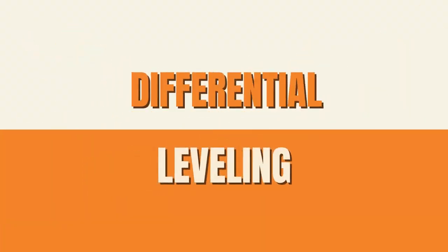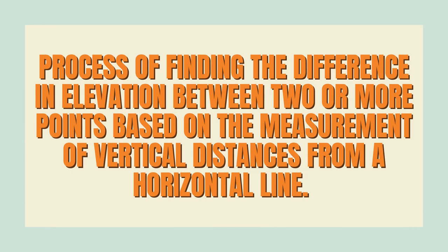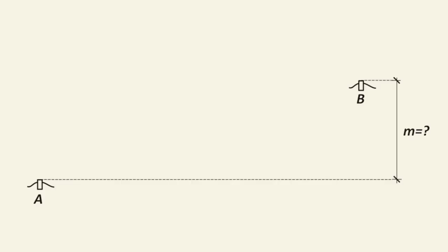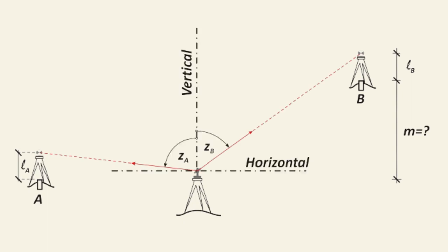Differential leveling is the process of finding the difference in elevation between two or more points based on the measurement of vertical distances from a horizontal line. On the other hand, Total Station Differential Leveling is a variant of conventional differential leveling, which is often used when traversing to calculate the heights of control points.